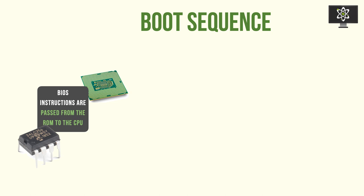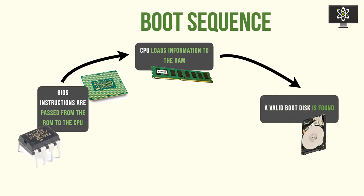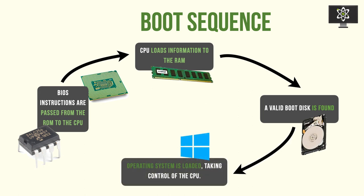What actually happens during the boot sequence is that BIOS instructions are passed from the ROM to the CPU, and the CPU loads that information onto the RAM to execute programs. The next step is to wait for a valid boot disk to be found. Operating systems run off some type of boot disk — typically an internal storage device such as a hard disk drive that contains a disk image of the operating system. Once that boot disk is found, the operating system is loaded and takes control of the CPU, and you're presented with the Windows login page.